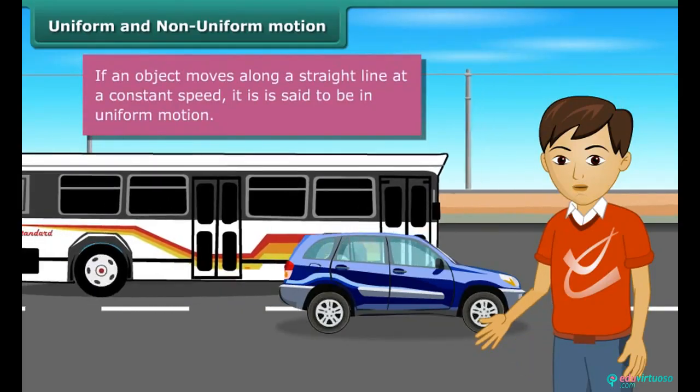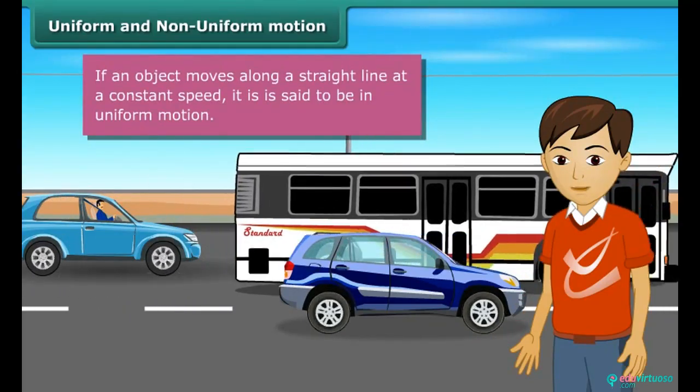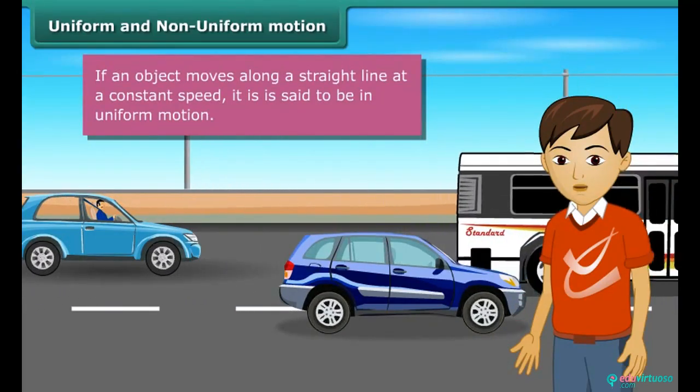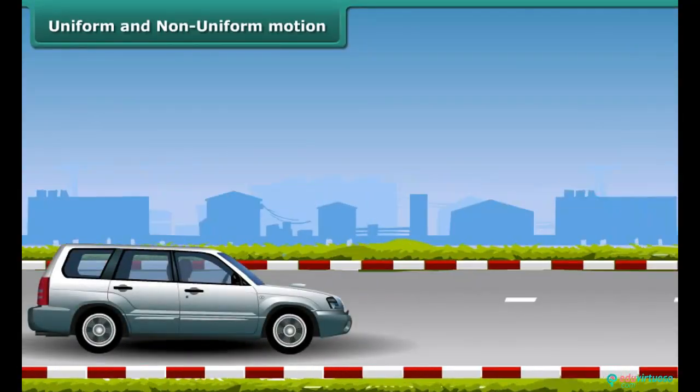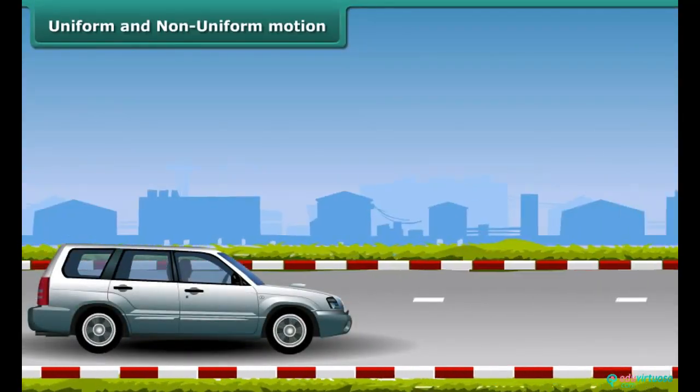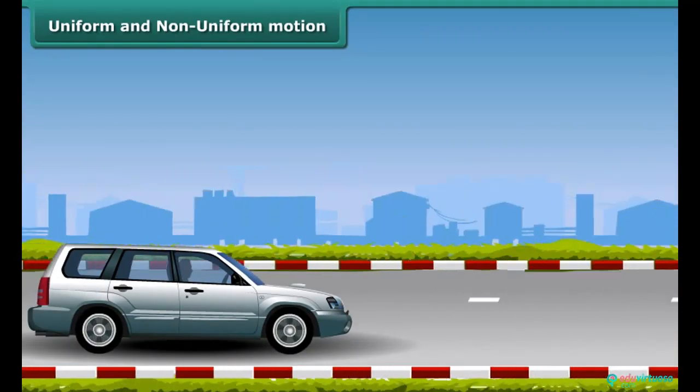If an object moves along a straight line at a constant speed, then it is said to be in uniform motion. A car, for example, may maintain the same speed when it covers a short distance.